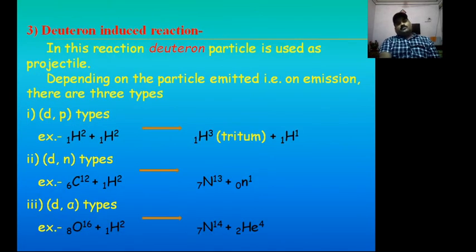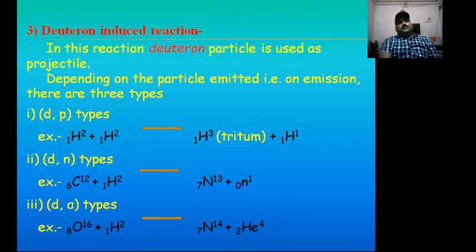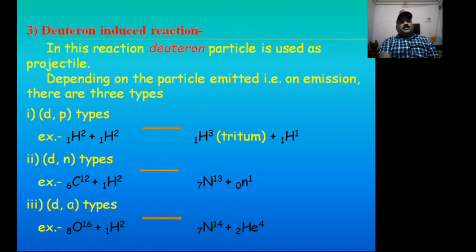The third artificial nuclear reaction depending upon the projectile is deuteron-induced reaction. Here the name itself suggests deuteron is used as projectile. Again, depending upon the type of ejectile or emission, there are three subtypes of deuteron-induced reactions: first, deuteron-proton type where proton acts as ejectile; second, deuteron-neutron type where neutron acts as ejectile; and third, deuteron-alpha type where alpha particle acts as ejectile.